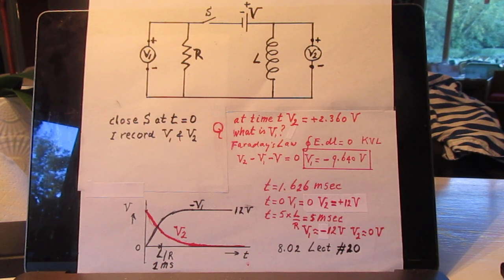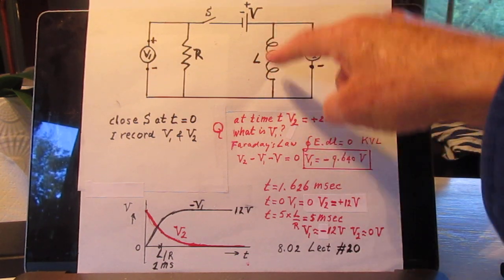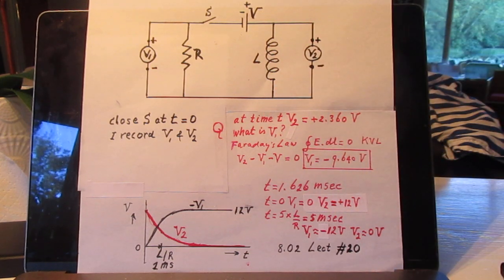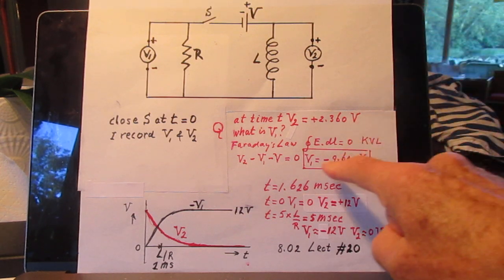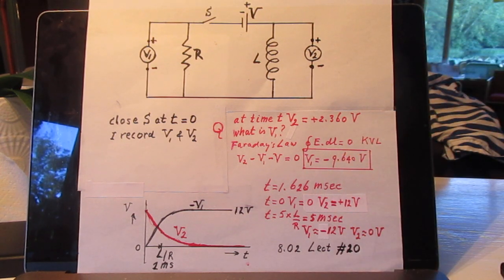So, it is a simple problem. And, of course, the reason why I introduced a self-inductor here is in a way to test you. Because that self-inductor doesn't play an important role other than that it prevents the current from going immediately to 1.2 amperes. So, that's why the V2 is here only plus 2.36 and why the V1 is still not minus 12.